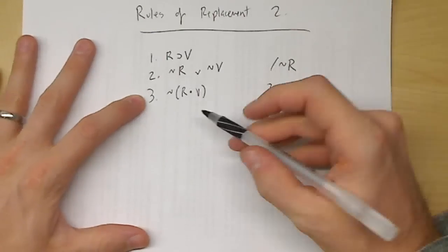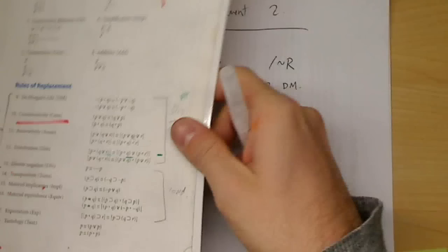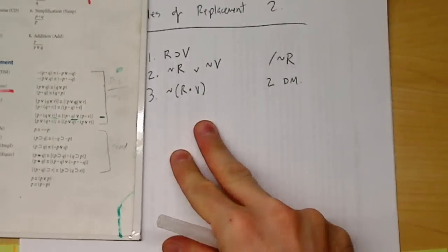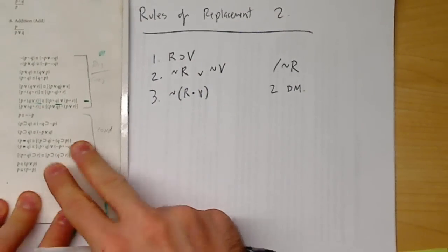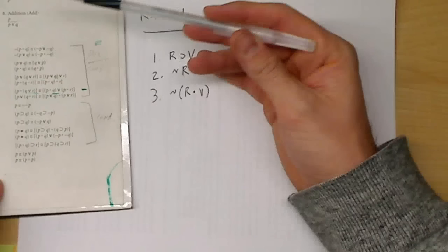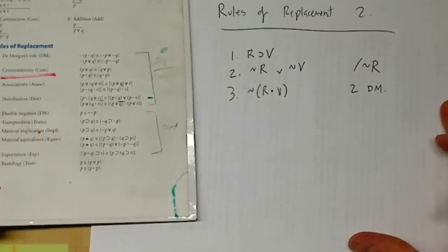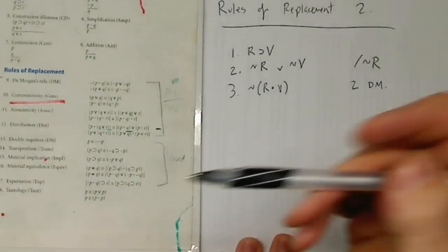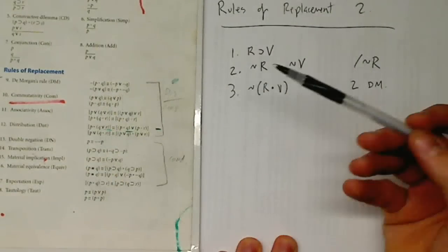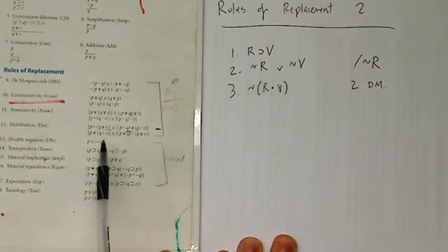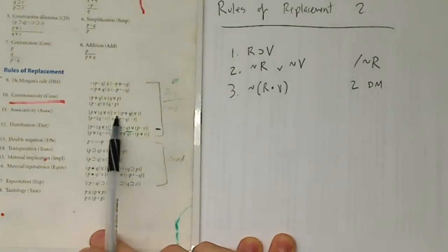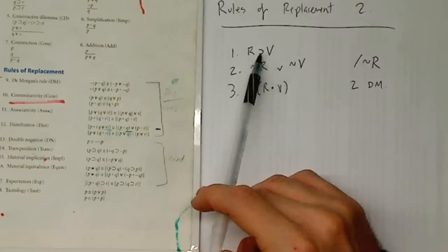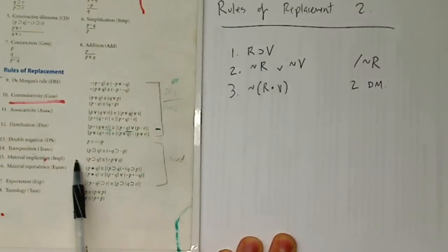Okay, that didn't really do much for me. What else could I use here? Let's go back and take a look at the rules of replacement. You can see I have a conditional, so I could use transposition or material implication with the conditionals. The question is which one should we do? Let's start off with material implication on line one, which means it's going to go from R→B to ¬R∨B. That's line one material implication.